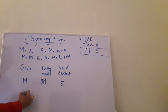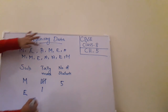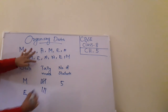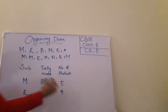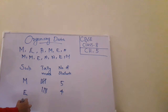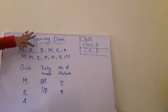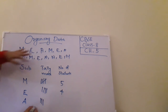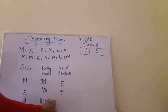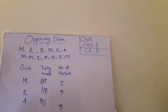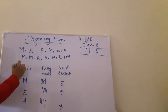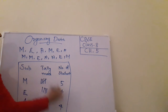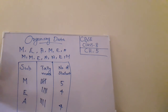The number of students who like Math is 5. Next, for English: 1, 2, 3, 4 — so 4 students like English. For Art: 1, 2, 3, 4 — so 4 students like Art as well.